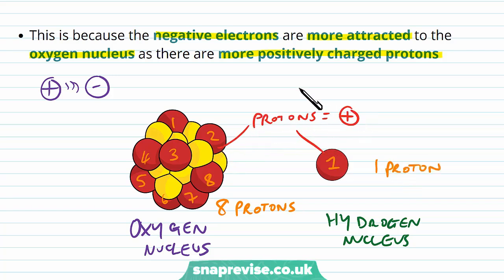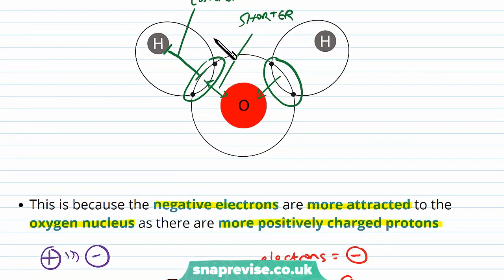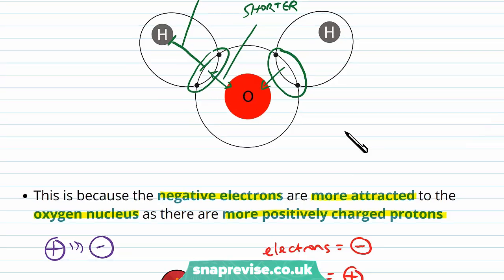Because the protons are positively charged and electrons are negatively charged, those covalent bonded electrons are going to be attracted to positive things. But because there's more protons in the oxygen nucleus than the hydrogen, they're going to be pulled more towards the oxygen than the hydrogen. Hence why the covalent bond is closer to the oxygen nucleus than the hydrogen one.